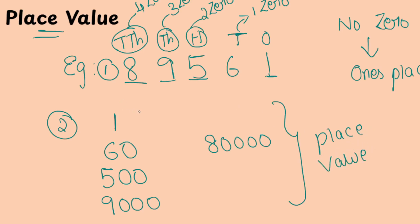Just remember: in the 1's place there is no zero; in the 10's place there is 1 zero; in the 100's place, 2 zeros; in the 1000's place, 3 zeros; and in the 10,000's place, 4 zeros. You can remember it like this — 1's: no zero, then 1, 2, 3, 4 zeros continuing. This is how you can remember place value.